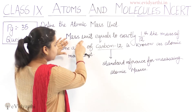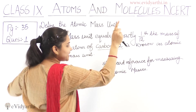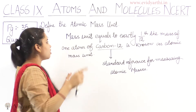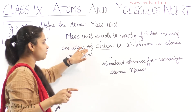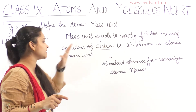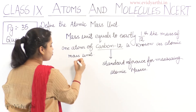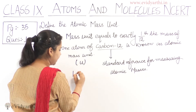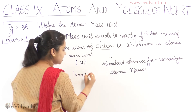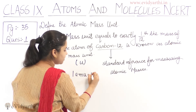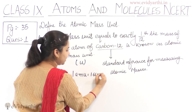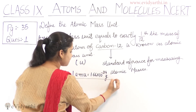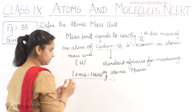So, one atomic mass unit equals exactly 1 by 12 the mass of one atom of carbon-12, which we represent as 'u'. And one atomic mass unit is equal to 1.66 into 10 raised to the power minus 24 grams. You should be careful to remember this value.